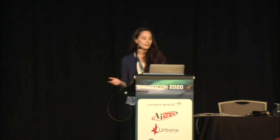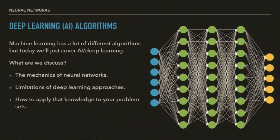Although machine learning covers a lot of topics, we are only going to really be covering the deep learning AI algorithms today. You'll also hear these referred to as neural networks, because they kind of look like a picture. We're going to discuss the mechanics of neural networks, what their limitations are, and how we can apply that knowledge to our problem spaces.